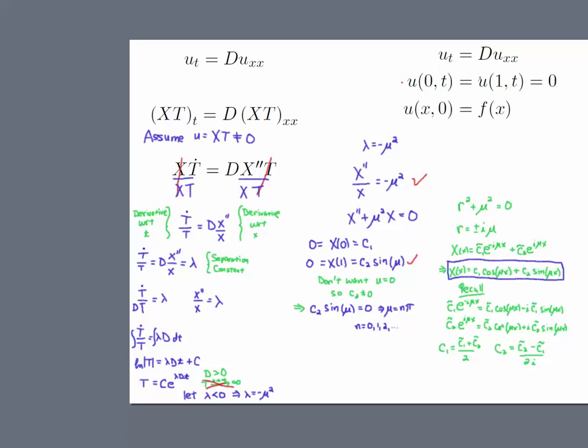I have X at 1—that's this boundary condition here—equals zero, so that means C2 times sine equals zero. But I don't want my solutions to be zero, so I'm going to assume that C2 is not equal to zero. That means I can't solve for that arbitrary constant, so I'm going to end up with an infinity of solutions: mu equal to integer multiples of pi will satisfy that result.